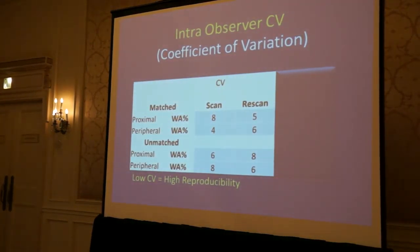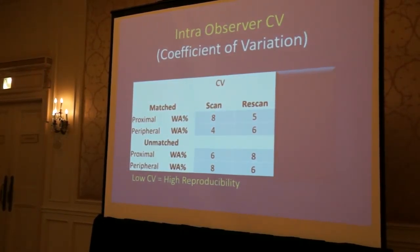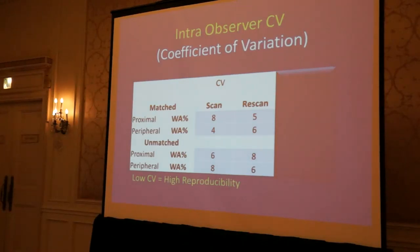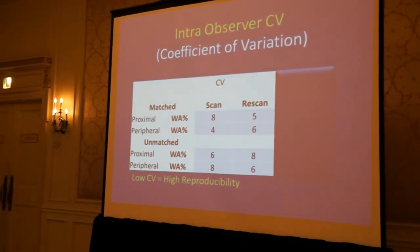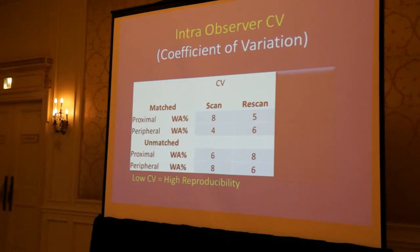The objective of my study was to determine measurement reproducibility between scanned and re-scanned images. We calculated a coefficient of variation, which measures the amount of variability in relation to the mean population. A low CV value corresponds to high measurement reproducibility and vice versa. For matched proximal and peripheral images, proximal images had a slightly higher CV value, corresponding to slightly lower reproducibility relative to peripheral images, but not significantly different. For unmatched images, the CV values were essentially the same.